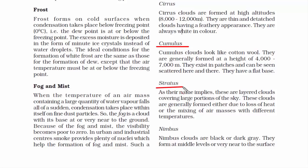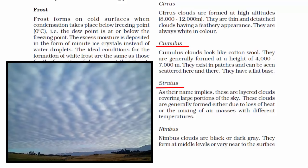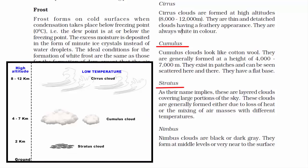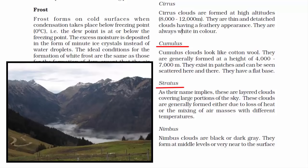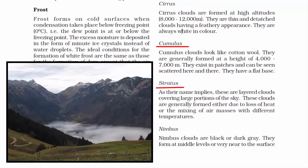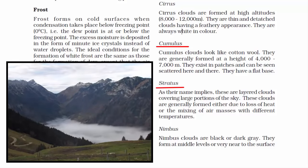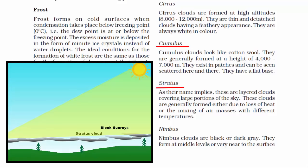The third type is stratus cloud. Stratus means existing in layers — these are horizontal layered clouds that cover large portions of the sky. They are also known as low altitude clouds, existing at a height of less than 2 kilometers. They are found in white and gray color. Since these clouds are at lower altitude, they can even come down to the surface of the earth in the form of mist or fog. They do not allow sunlight to pass through, making the day look dull and dark.